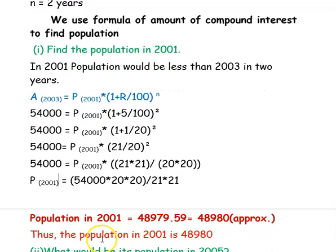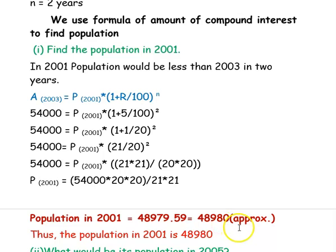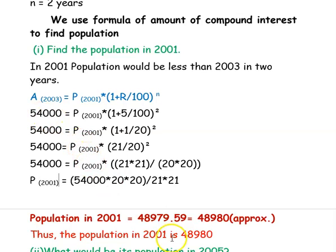Simplifying this gives the population in 2001 as approximately 48,980, which is less than the population in 2003 of 54,000 — consistent with 5% annual growth.